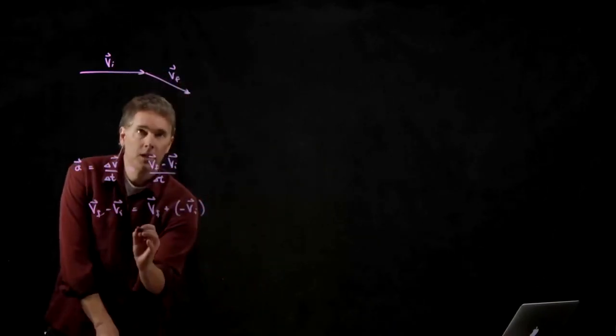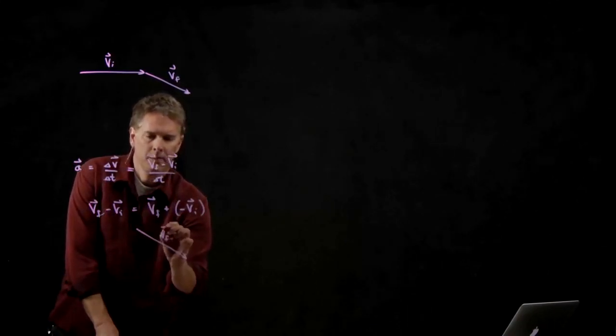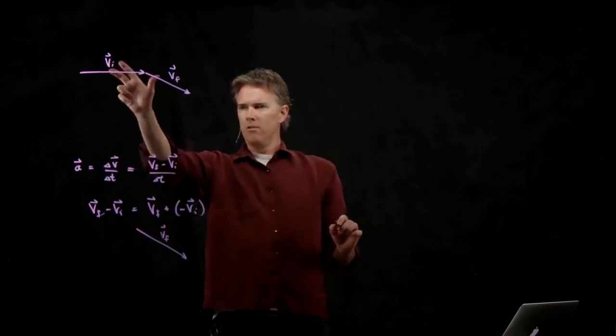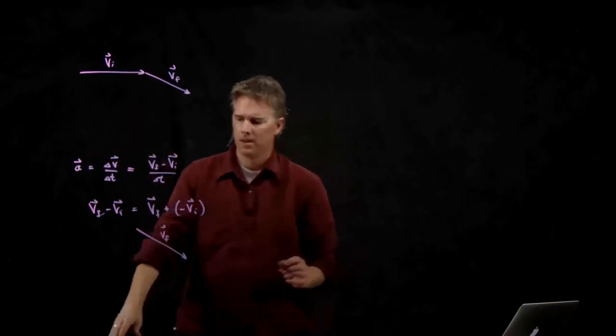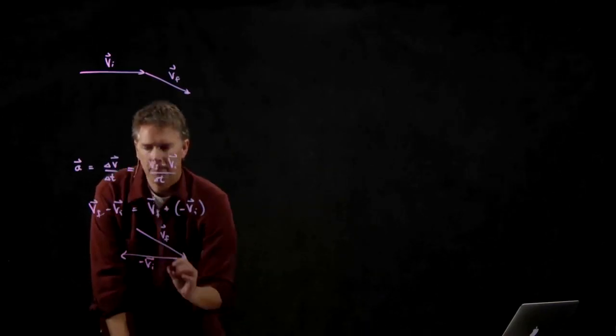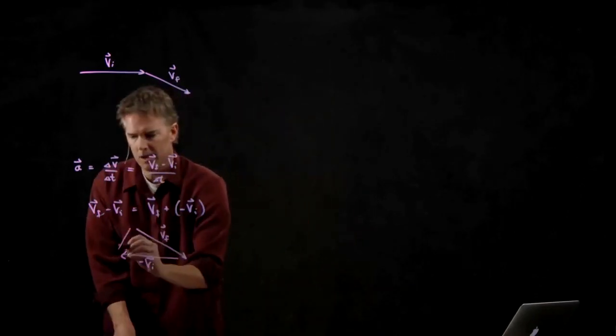v final looked like this. What is negative v initial? It's this arrow flipped over. And so it would be back like that. So where is a? A is right there. Here we go.